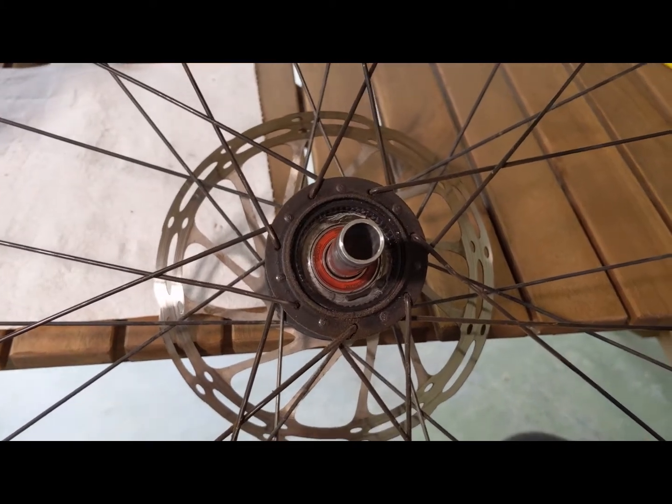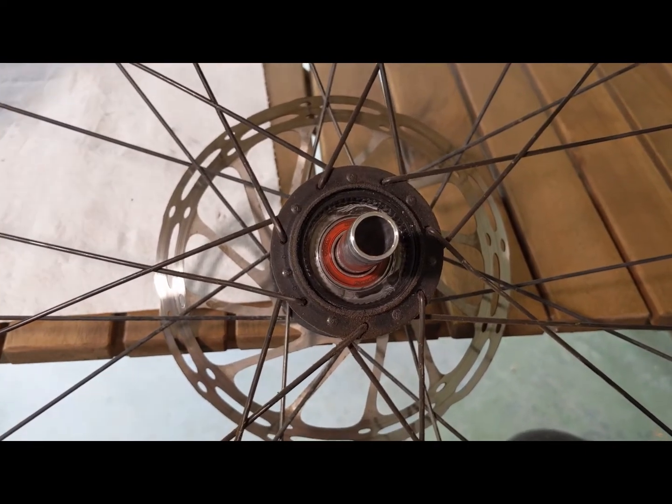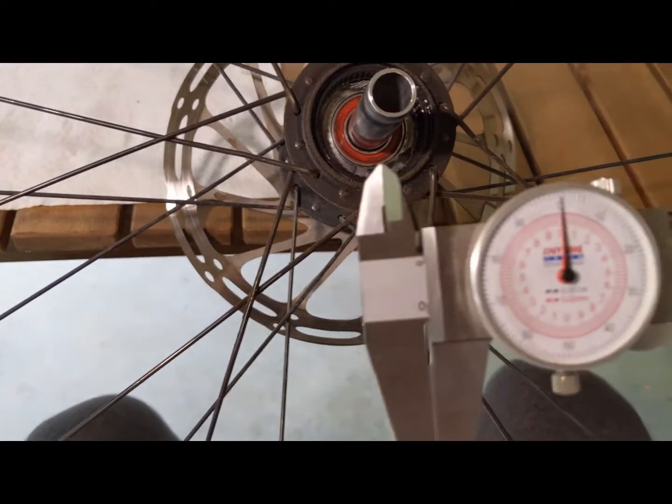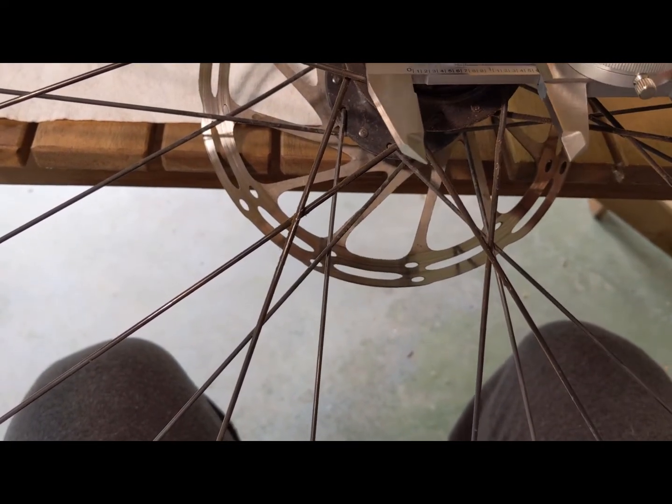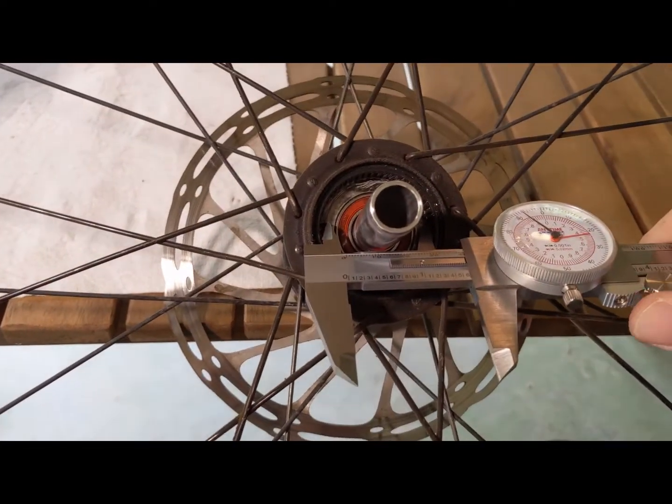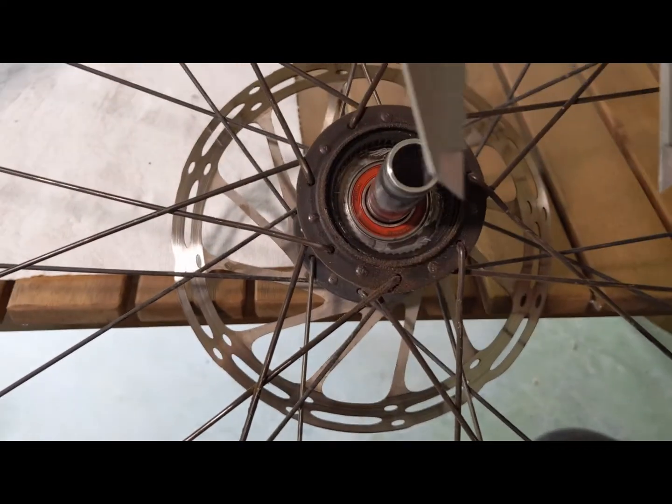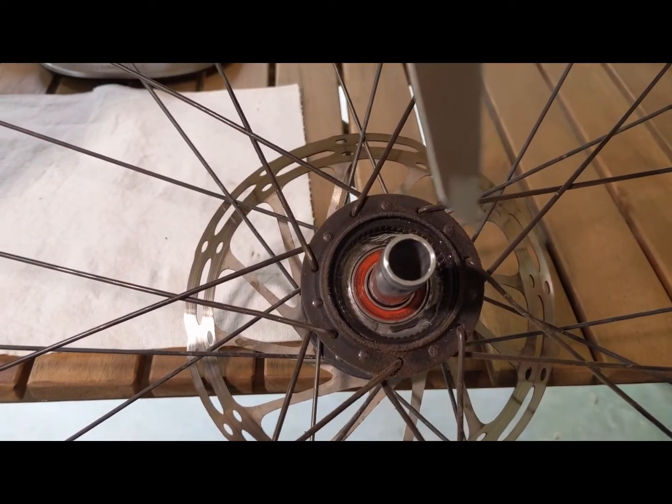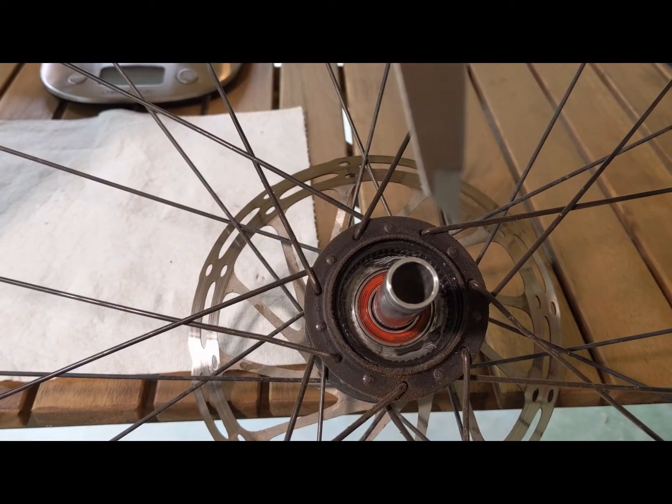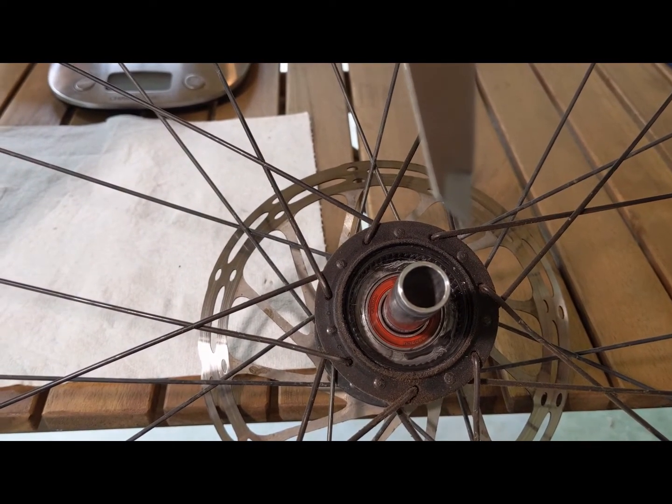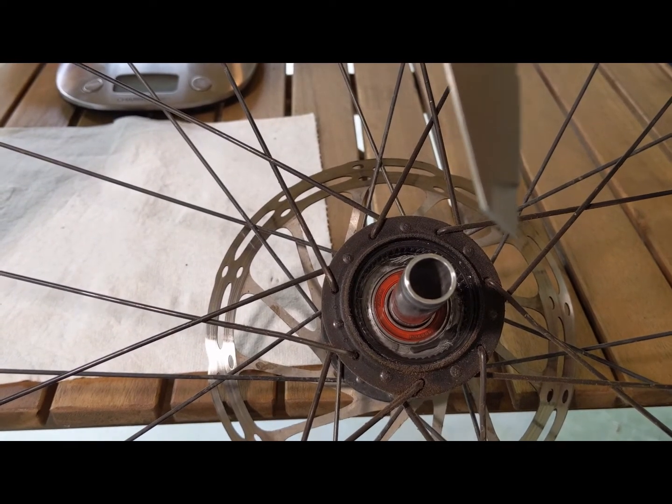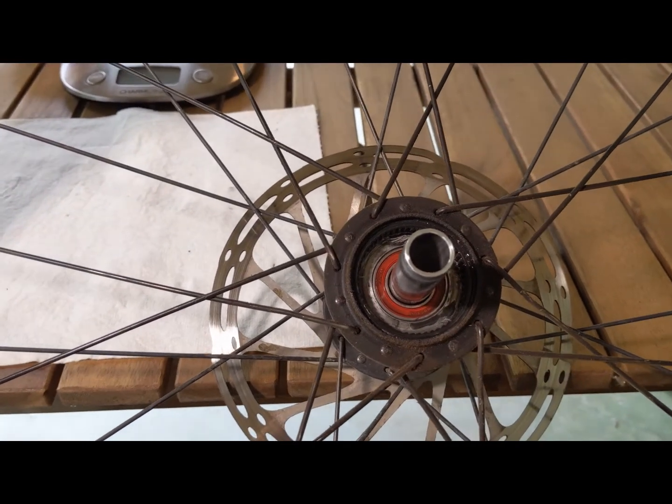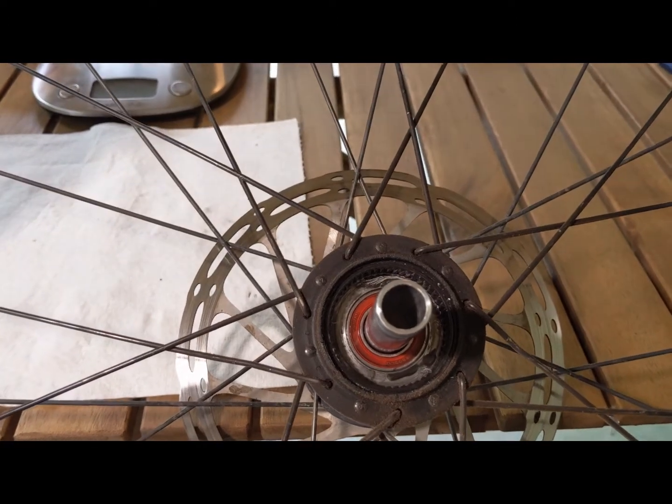So the first thing that we're going to be measuring is the diameter of the outer drive ring. I've got my pair of calipers here. We'll get a nice average reading of 40.51 millimeters. We'll record that and then divide that by two to get the radius.